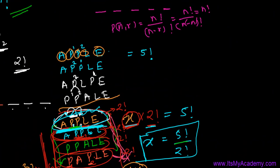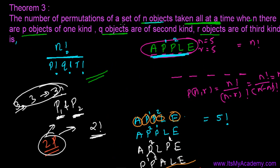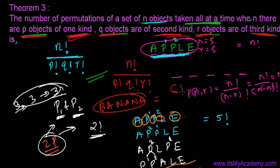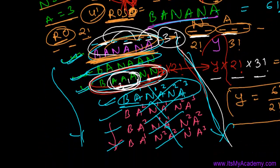Now going to the generalization based on the theorem: the number of permutations of a set of N objects taken all at a time, when there are three kinds of letters — P objects of the first kind, Q objects of the second kind, and R objects of the third kind — is N factorial divided by P factorial, divided by Q factorial, divided by R factorial. Just like in BANANA with six total letters, we divide by three factorial for the three A's and by two factorial for the two N's.